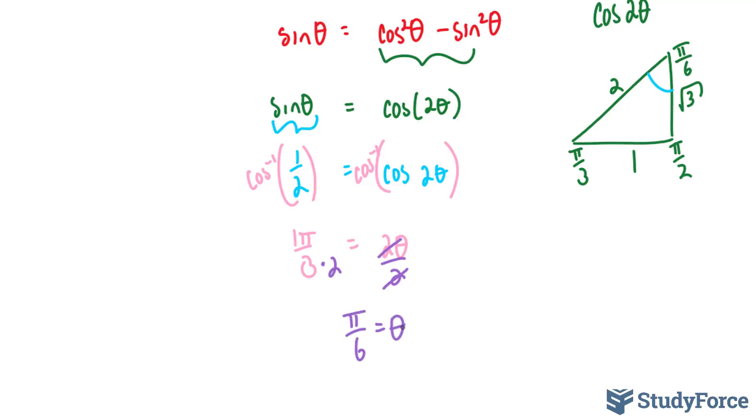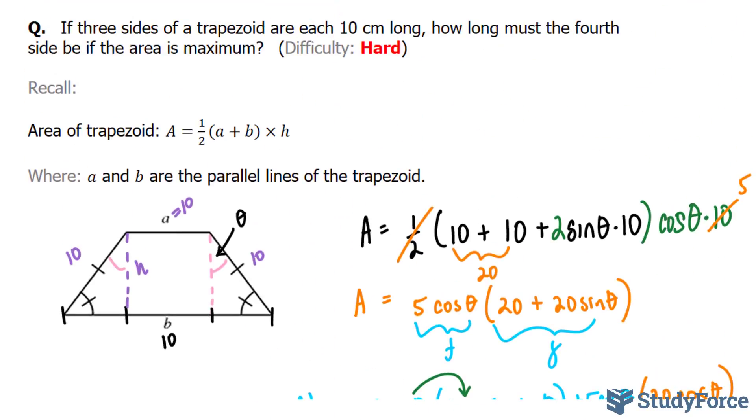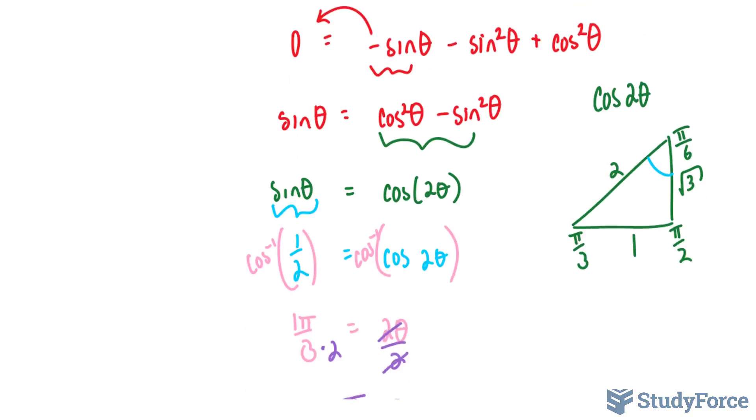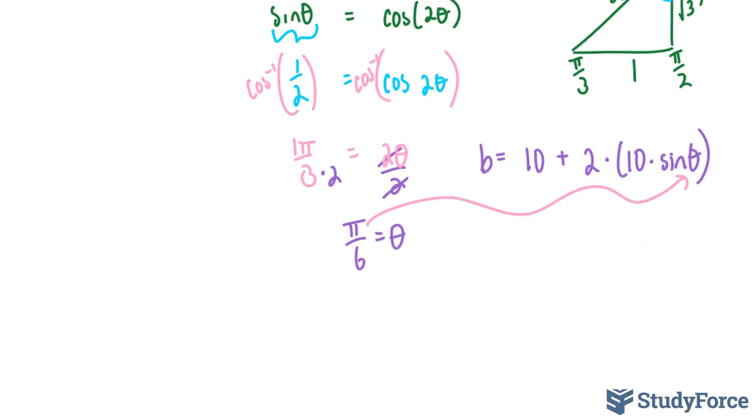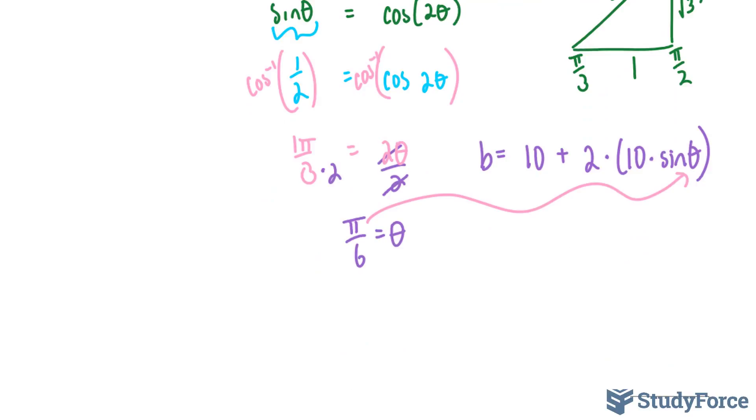So that is our critical point, and now what we will do to answer this question, it says, how long must that fourth side be? So to find that fourth side, we're going to take this number, and remember, b was equal to 10 plus 2 times 10 times sine theta. So let's do that.